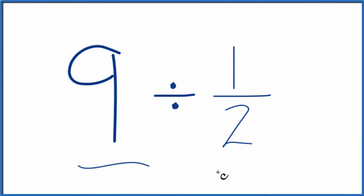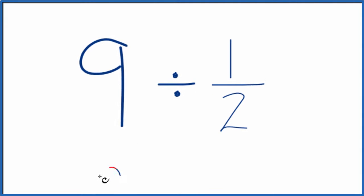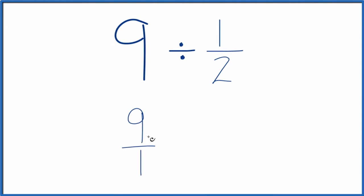If you need to divide 9 by 1 half, here's how you do it. Let's call this 9 over 1. It's still 9, we're just dividing by 1, but that gives us a fraction. That'll be helpful.